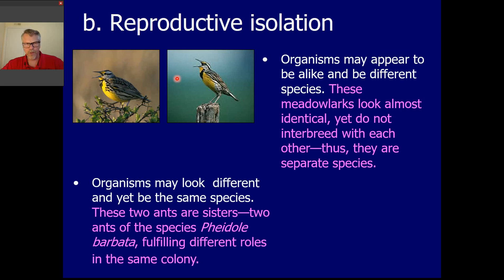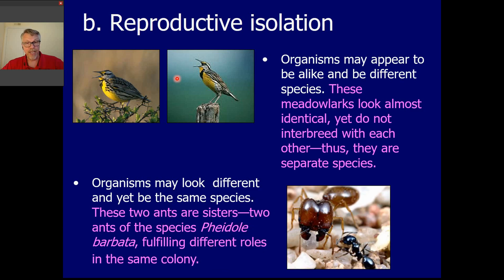But you can't let appearances fool you. Sometimes organisms can look really different and actually be the same species, like these two ants. So these are both ants of the same species. They're really, you know, they can even be members of the same family from the same queen, but they're really different from one another because, for ants at least, they fulfill different roles in their colony. And so they appear very different. They need different body structures, and so they look different from one another, but they're the same species.